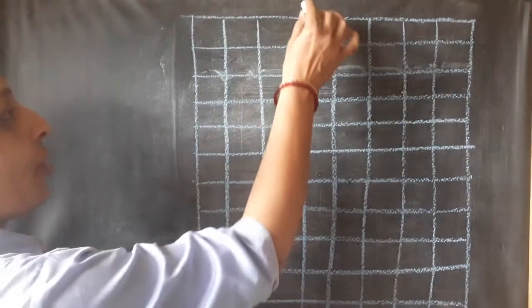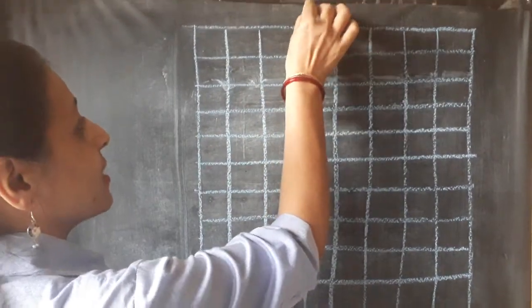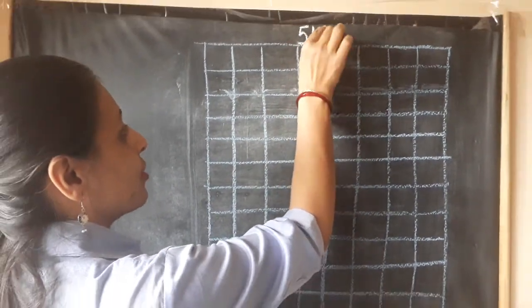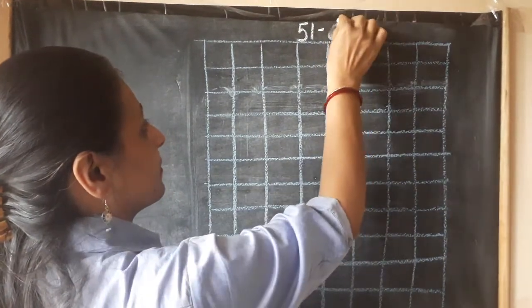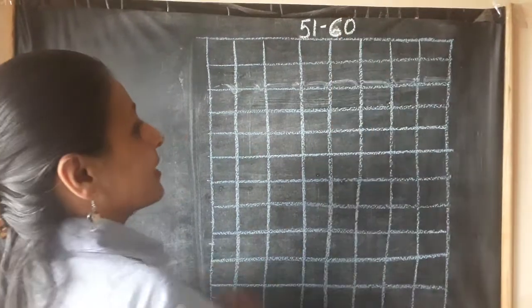Children, let's write 51 to 60 on the board. First of all, you are going to write 51 to 60. You are going to give the heading like this.